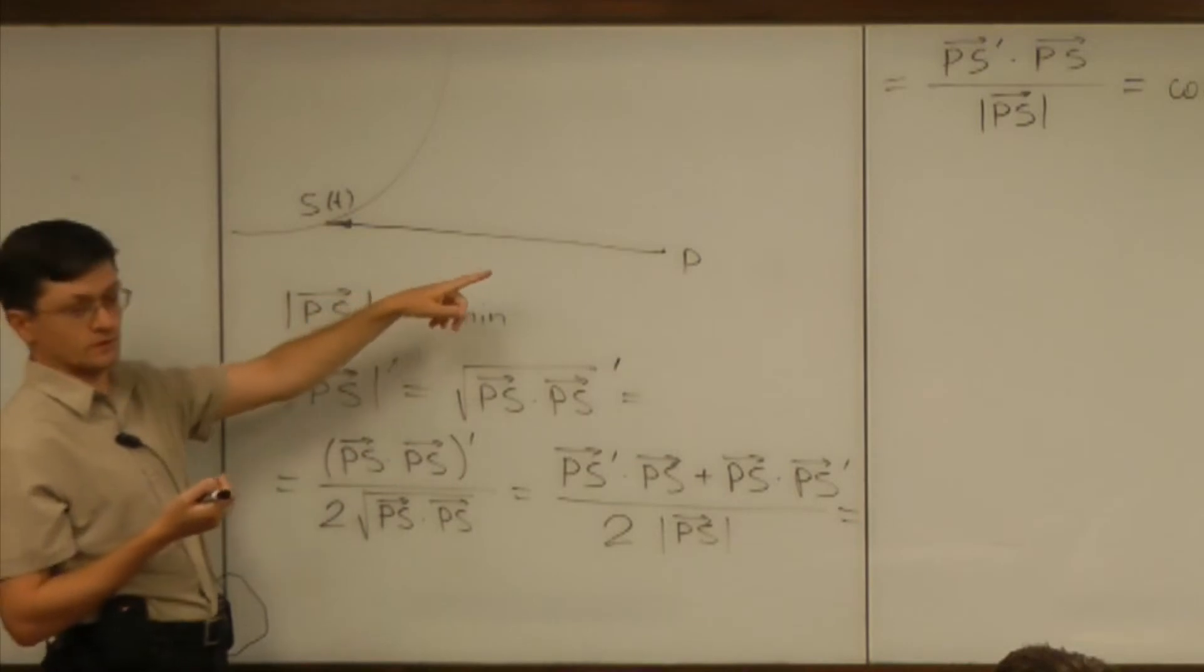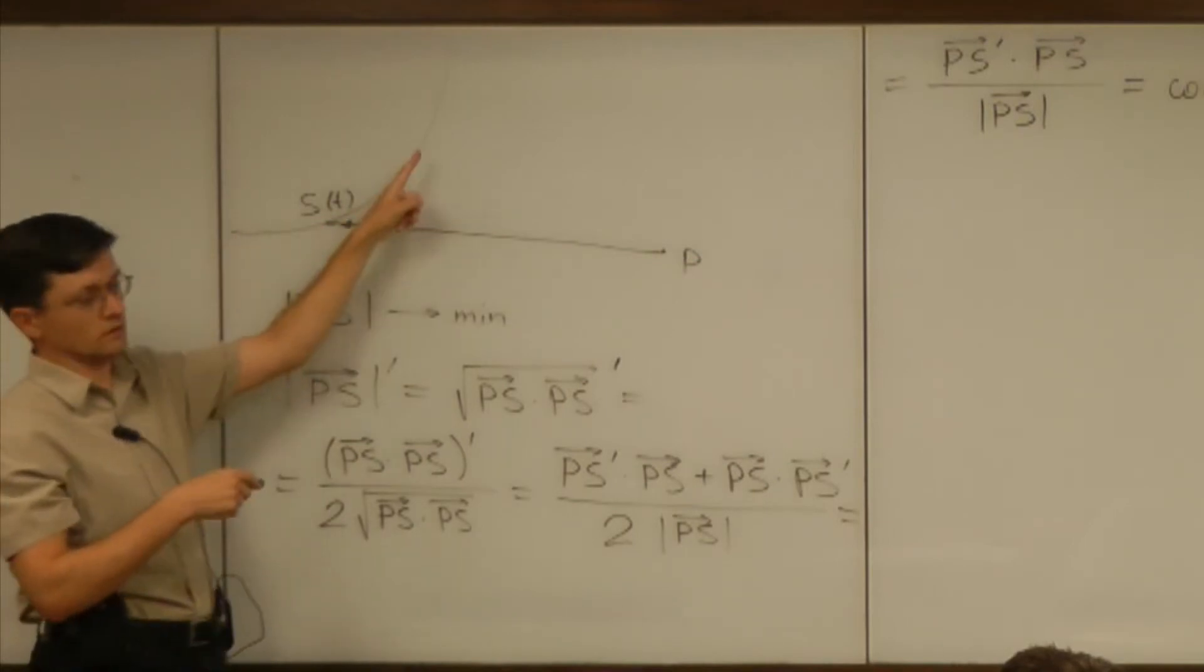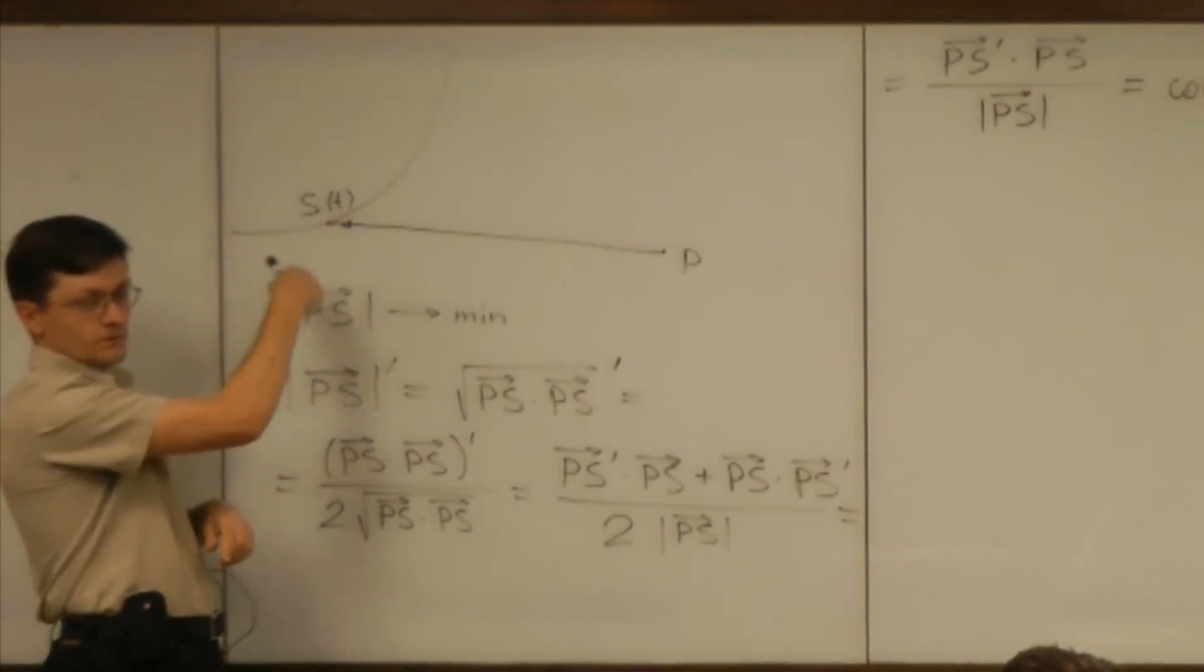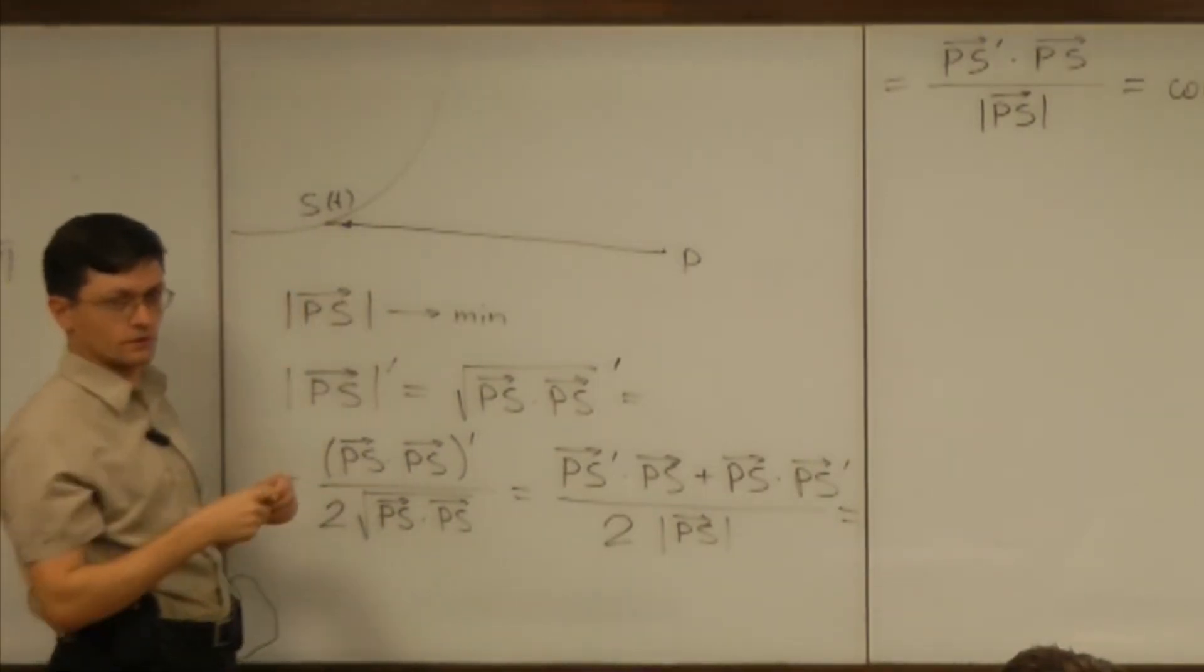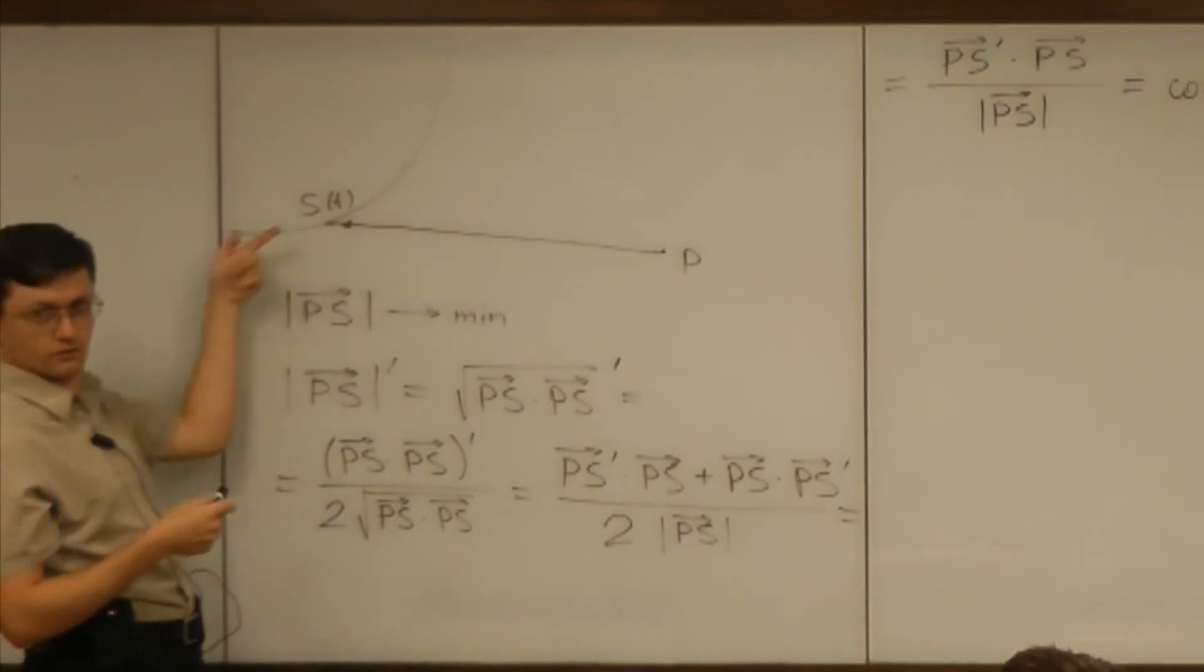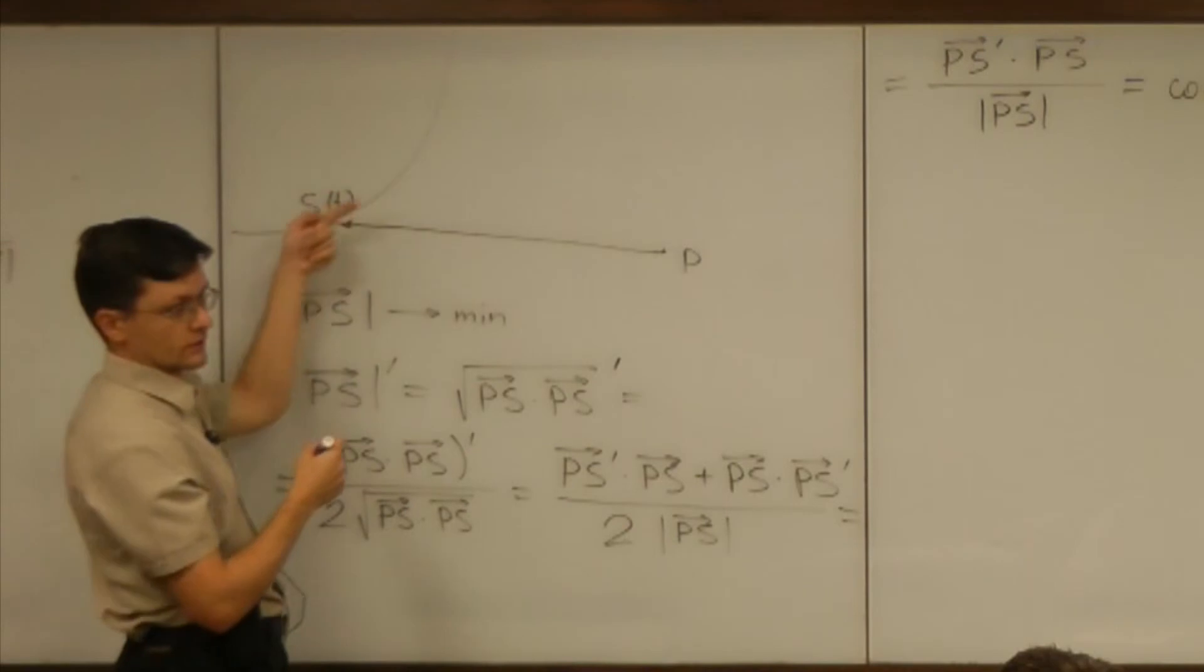Well, PS is position of that moving particle because P is fixed, S is moving, and PS points to us where the particle is now. And the derivative of our position is velocity. And can we imagine how it should be? Well, it should be tangent. So we don't know at this point whether it moves right or left, it depends on how parameterized the curve.